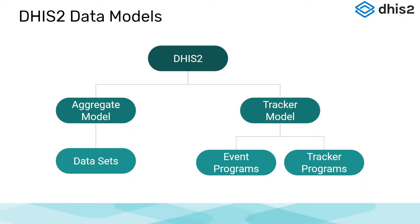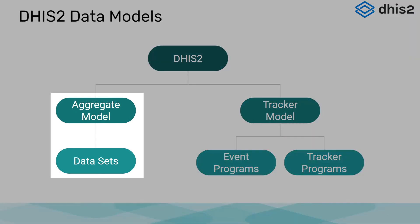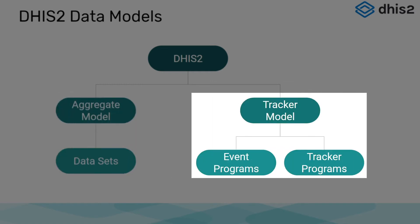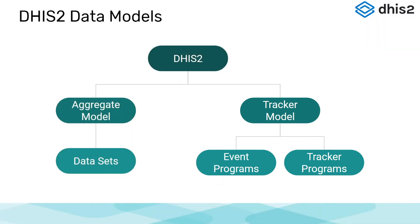Before diving into the course content, I want to review the data models that are supported in DHIS2 — the aggregate and tracker data models, as I will be referring to them in this overview. The aggregate data model holds aggregated data in collections of data elements called data sets. The tracker model is quite different, as it holds individual level data. This model is actually divided into two components known as event programs and tracker programs. We will quickly review these terms, and as the course unfolds, we will go over them in more detail.